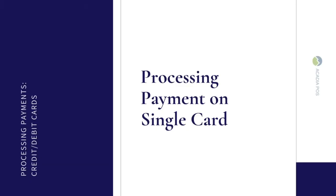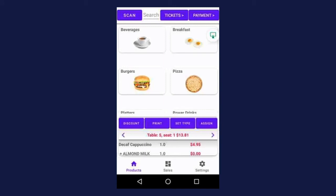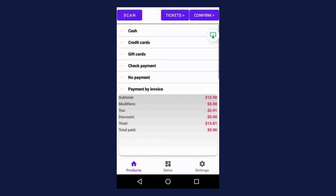In this section, I'm going to show you how to take a credit card payment where the customer is only using one card to pay the entire bill. Let's say you've already added the products to the cart and the customer is ready to check out. The customer informs you that they want the entire bill on one card. You're going to go to payment in the upper right hand corner, and then you're going to select credit card, and that section will expand.